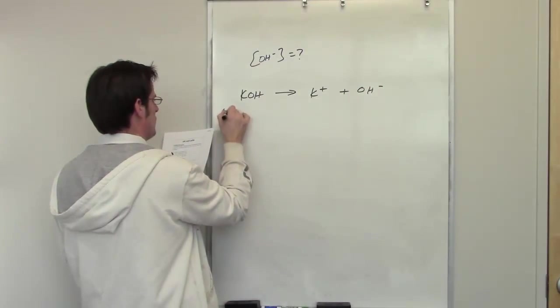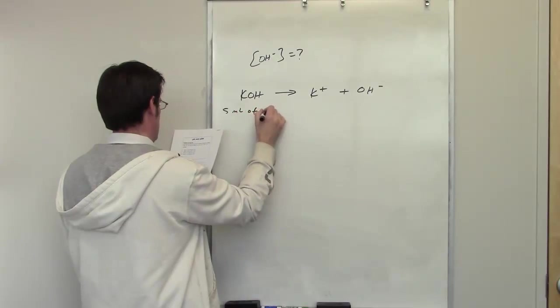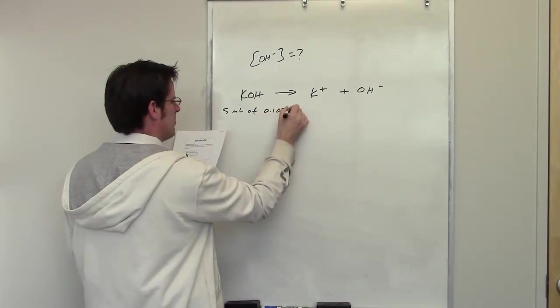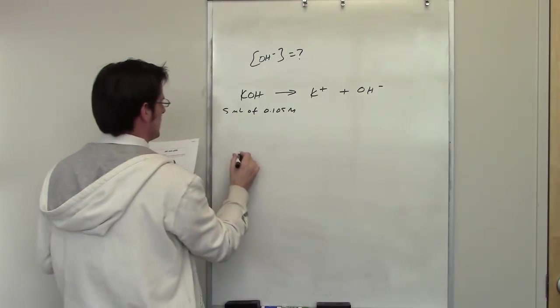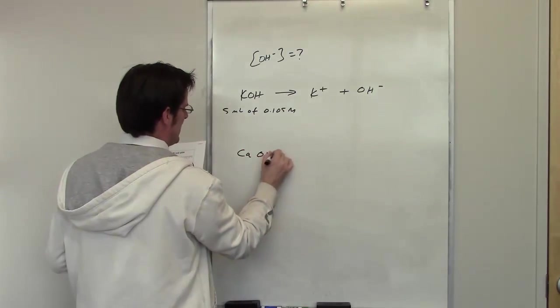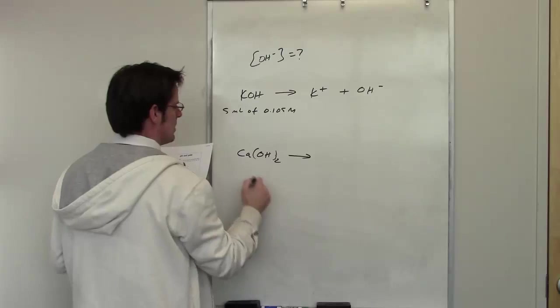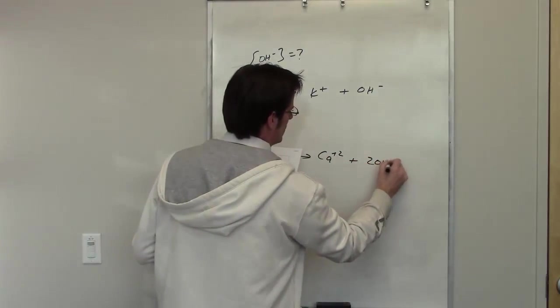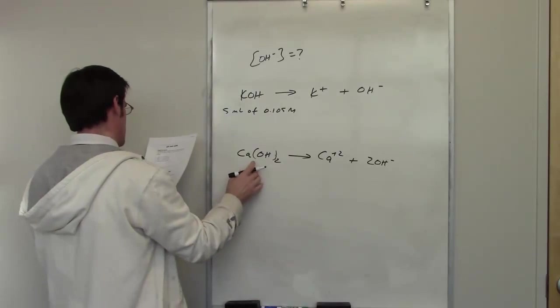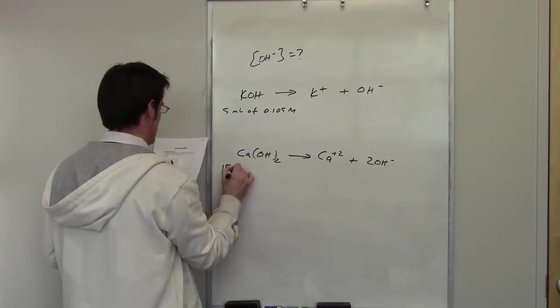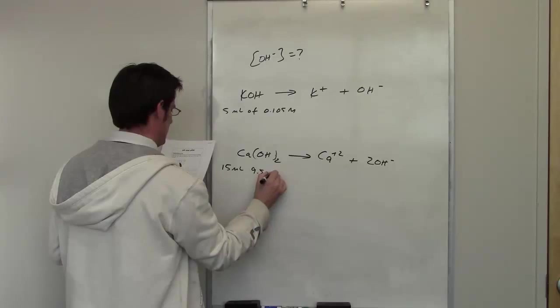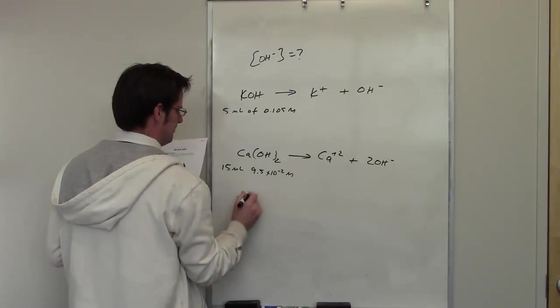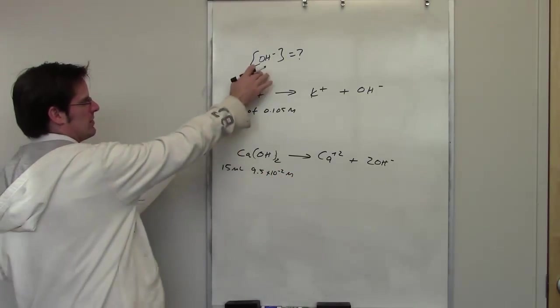It tells us that we've got 5 mils of a solution that's 0.105 molar KOH. It then says separately that in the same vessel we have calcium hydroxide. Calcium hydroxide dissociates to form calcium 2 plus and 2 molar equivalents of hydroxide. How much calcium hydroxide are we adding? We're adding 15 mils of 9.5 times 10 to the negative 2 molar. What is the final concentration of hydroxide going to be?